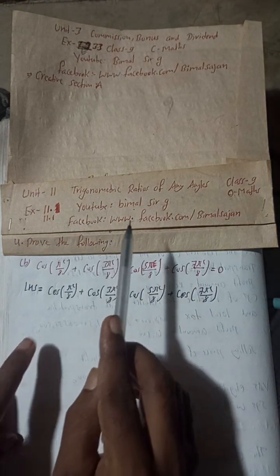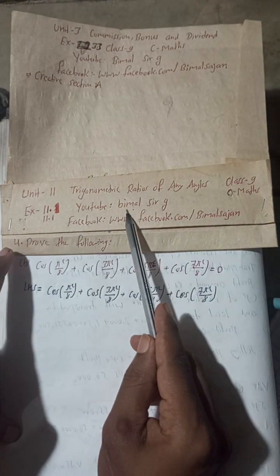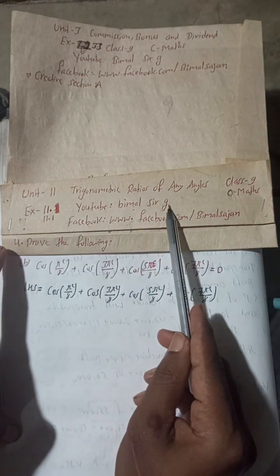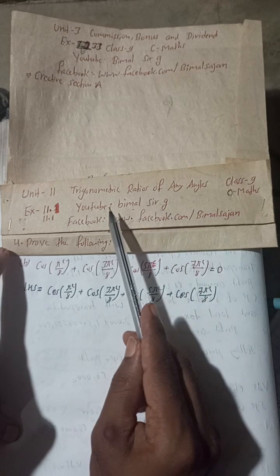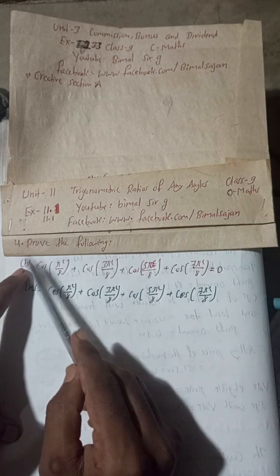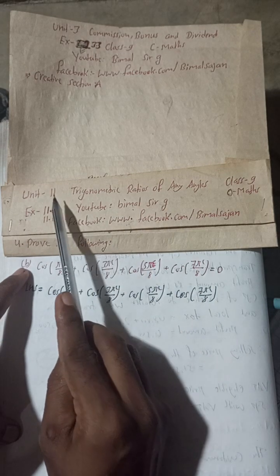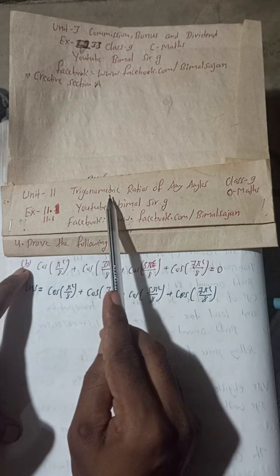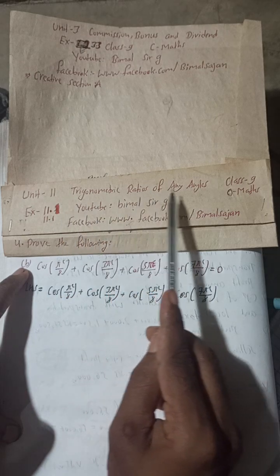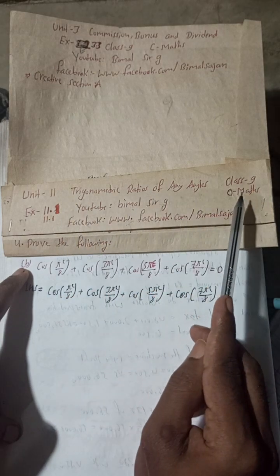Radhe Radhe, Jaya Sri Krishna. Class 9 and 10 students, welcome back to Vimal Sarji YouTube channel. This is question number 4B of Exercise 11.1, Unit 11, Trigonometric Ratios of Any Angles, Class 9 Optional Maths.